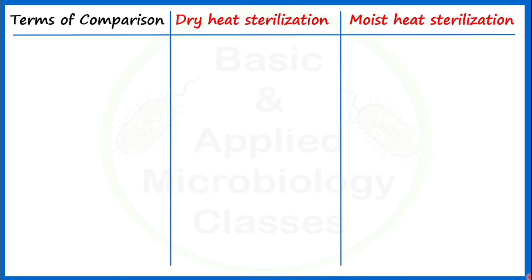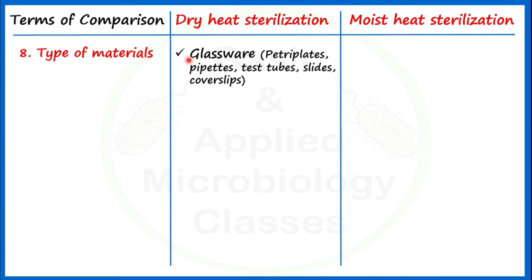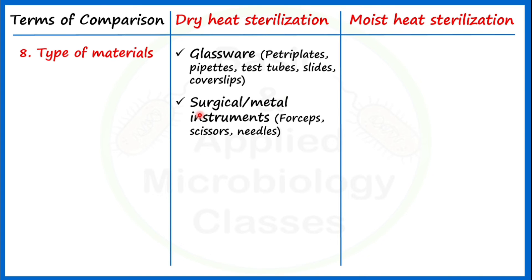The eighth point of difference is the type of materials. Dry heat sterilization is generally used to sterilize glassware such as Petri plates, pipettes, test tubes, slides, and cover slips. It is also used for surgical metal instruments like forceps, scissors, and needles. Additionally, oils, powders, and waxes are sterilized by dry heat sterilization.